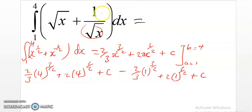If we simplify this, we will have 16. This gives us 16 by 3 plus 4 plus constant c minus 2 over 3 plus 2 plus constant c.